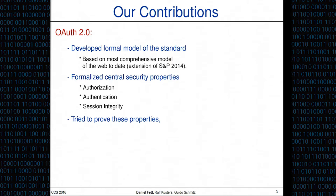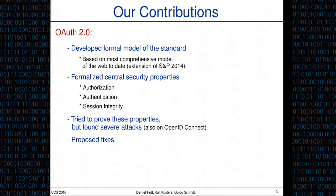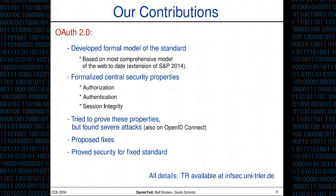However, at first we failed to prove these properties because we found severe attacks on OAuth, which interestingly also translate into attacks on OpenID Connect, a single sign-on standard based on OAuth. We then proposed fixes against these attacks — mitigations currently under discussion to be included in the new RFC — and then proved the security for the fixed OAuth standard. If you're interested in the details, please have a look at our technical report and paper, available on our homepage.